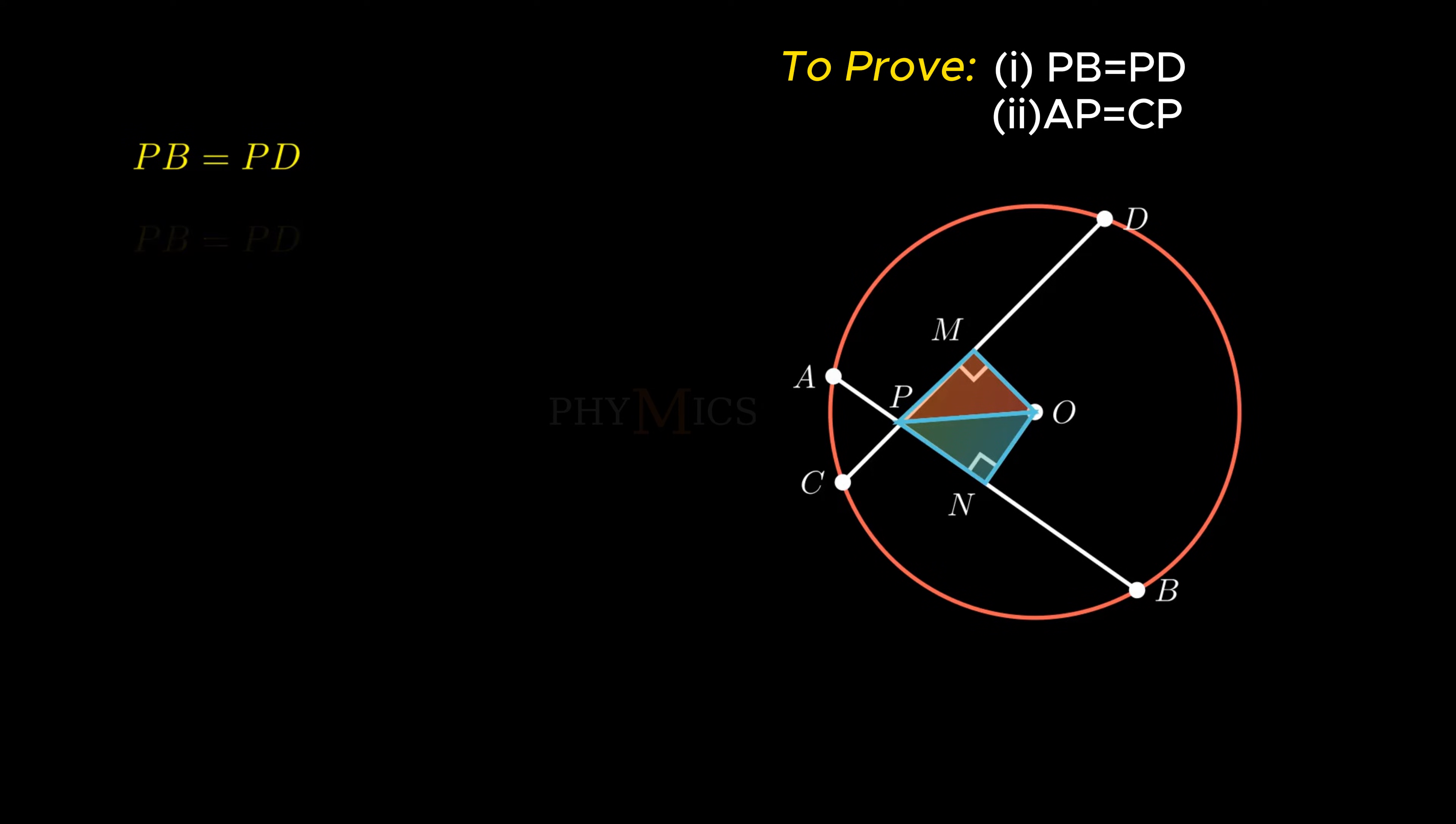Similarly, to prove minor segment AP equals minor segment CP, we need to subtract the corresponding major segment PB and PD from the equal chords AB and CD respectively.